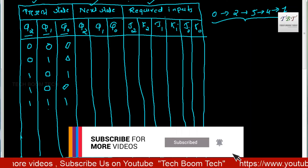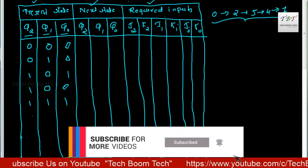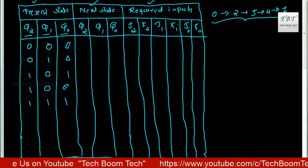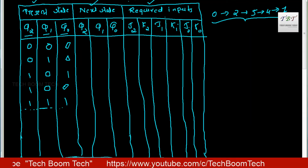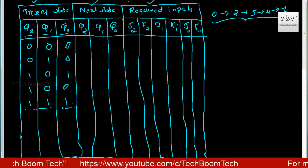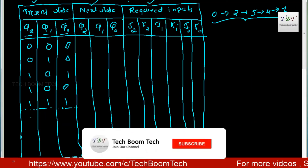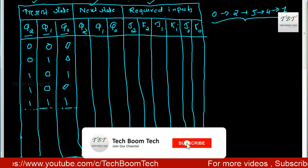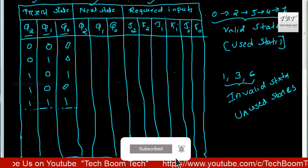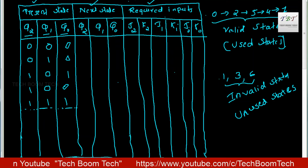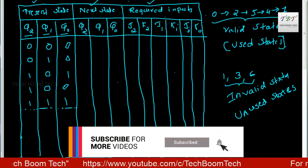Now we will fill in the valid states in the table. The valid states are filled with dotted lines for unused entries. Then we will fill in the invalid states, which are the unused states. The invalid states are now identified and separated from valid states.